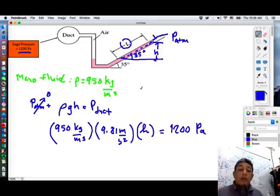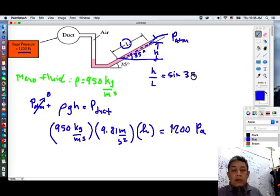Now from trigonometry, you know that H is a function of L. H over L is sine 35. So therefore, your H is a function of L. H is L sine 35.